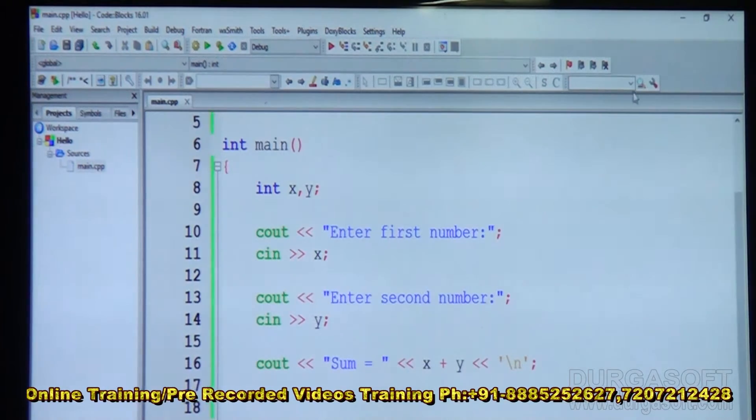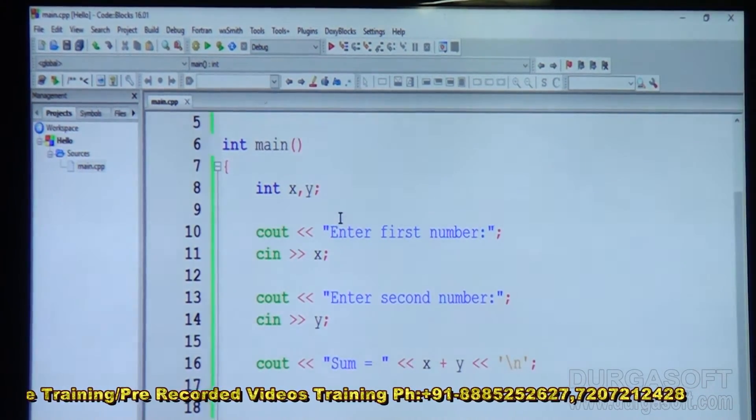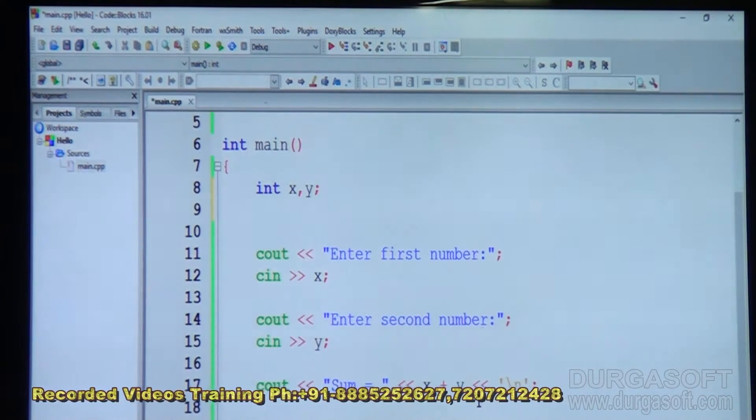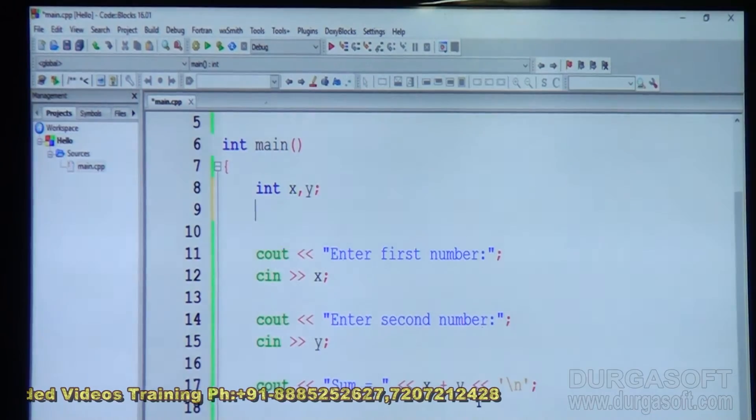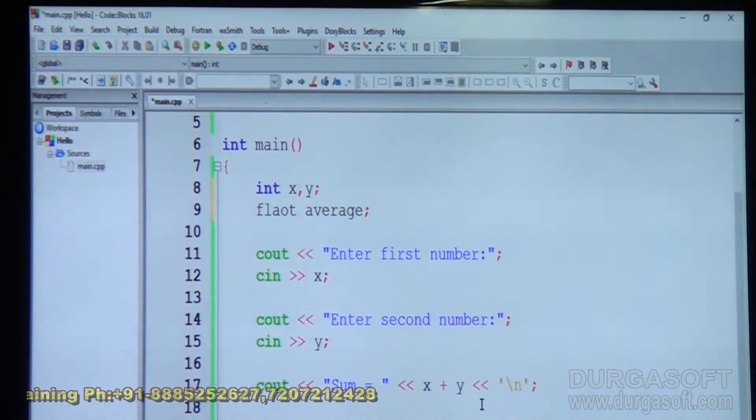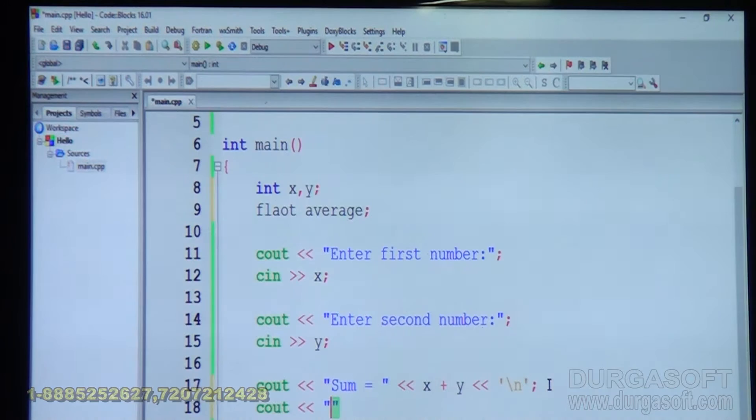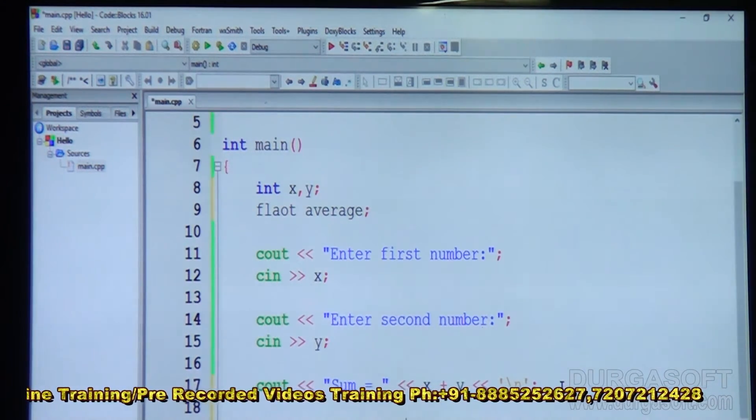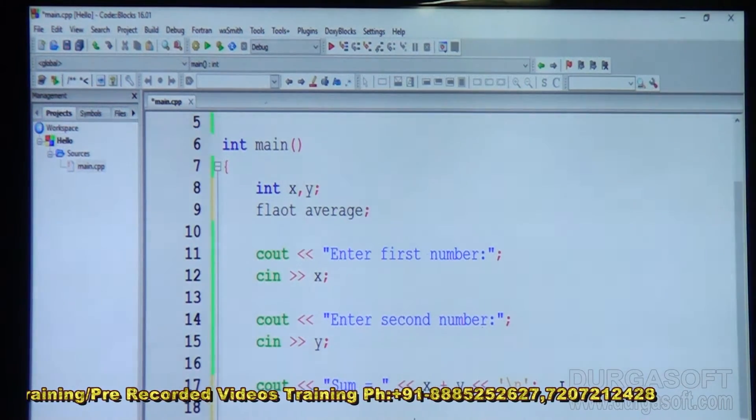G plus plus there is a one new feature. Suppose I want to display average of this program. Then what I can do? I can display one more integer. I can declare one more integer float average and here I can write one more cout. Cout average is equal to x plus y by 2 is the average.